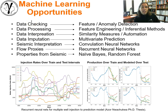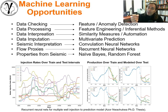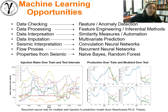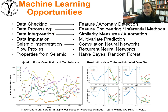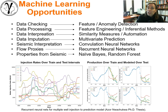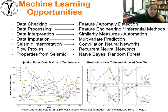For instance, data checking — it makes a lot of sense to do different types of feature anomaly detection, looking for individual sample data in space, time, and in a multivariate setting that are outliers relative to the local statistics, or according to spatial continuity, or values outside of what's physically plausible. For data processing — the data preparation step of getting ready to build our models — feature engineering, feature transformations, and inferential methods like dimensionality reduction are all very valuable for building data preparation and processing workflows.